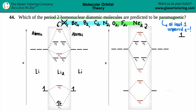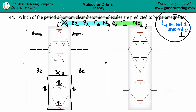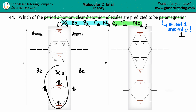Moving to Be₂: beryllium has two valence electrons, so each Be contributes two, giving a total of four electrons in the molecular orbital. Filling from the bottom, all four electrons pair up. There are no unpaired electrons, so Be₂ is also diamagnetic.